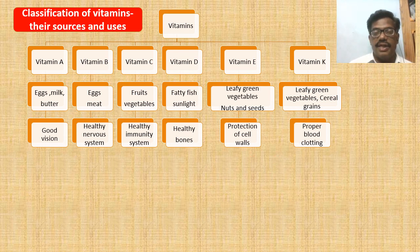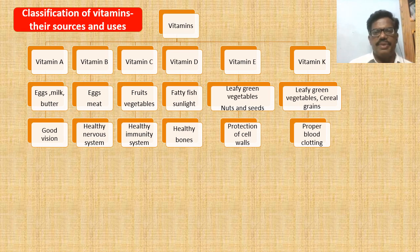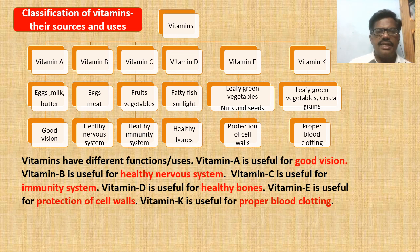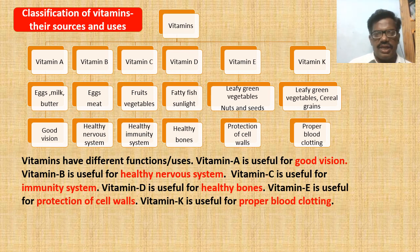When you closely observe the diagram, it is clear that the diagram presents the usage of vitamins. We can make the students write a few sentences about the functions or usage of different vitamins. Vitamins have different functions: Vitamin A is useful for good vision. Vitamin B is useful for a healthy nervous system. Vitamin C is useful for the immunity system. Vitamin D is useful for healthy bones. Vitamin E is useful for protection of cell walls. Vitamin K is useful for proper blood clotting.